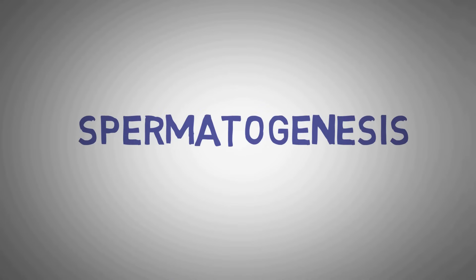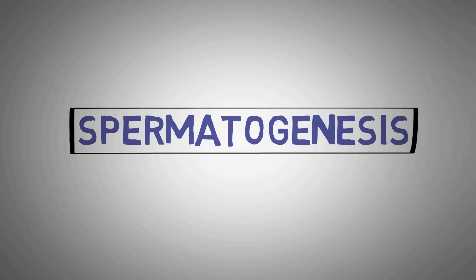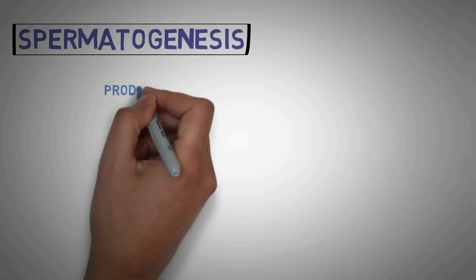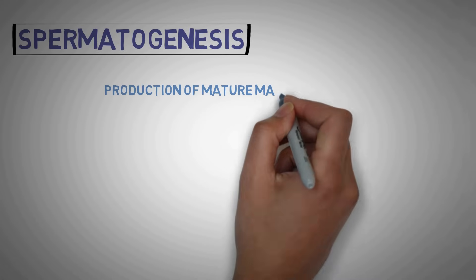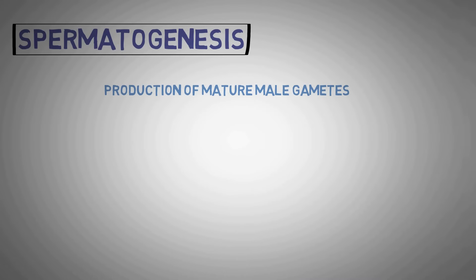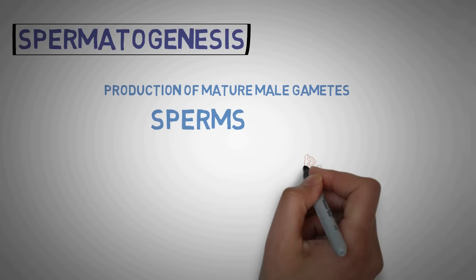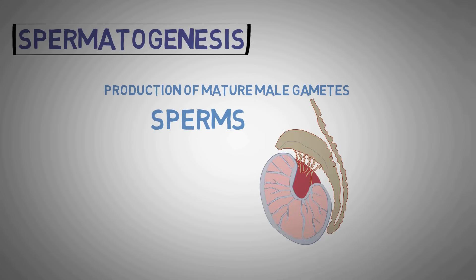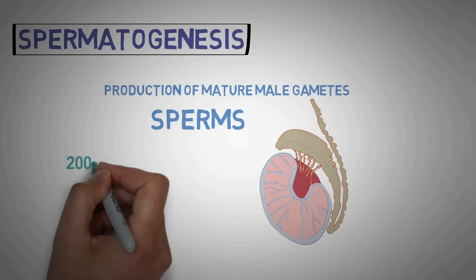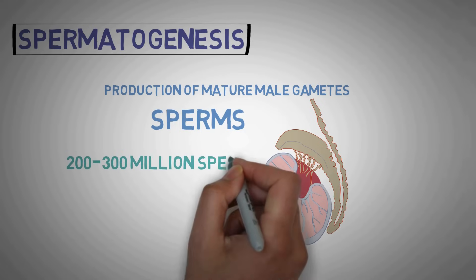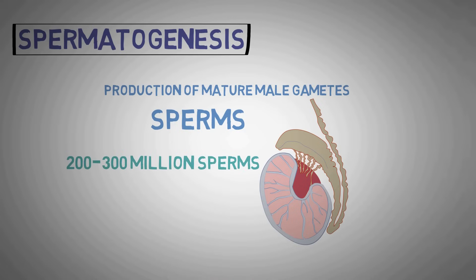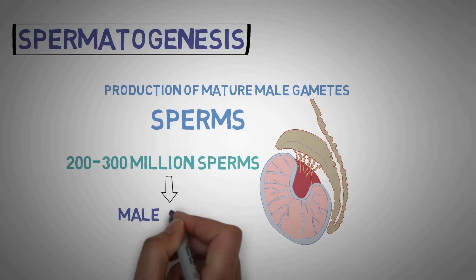In this video we will study about the process of spermatogenesis. Spermatogenesis is the production of mature male gametes which are known as sperms. About 200 to 300 million sperms are produced daily in the male gonads known as the testes.